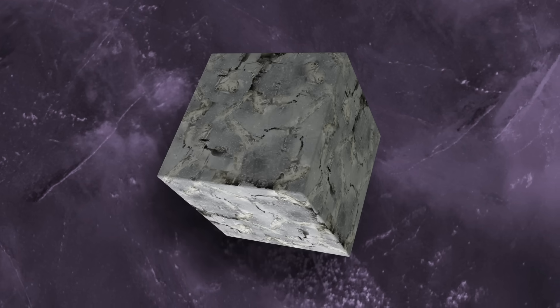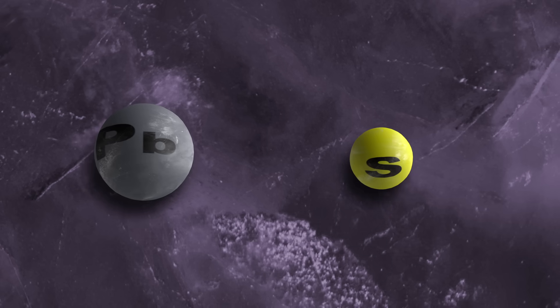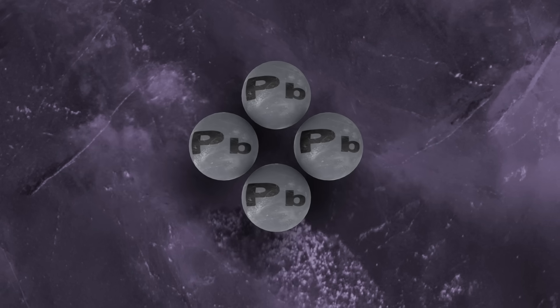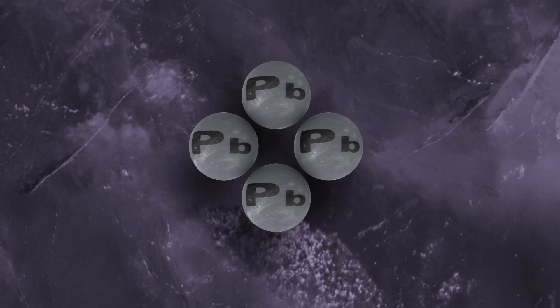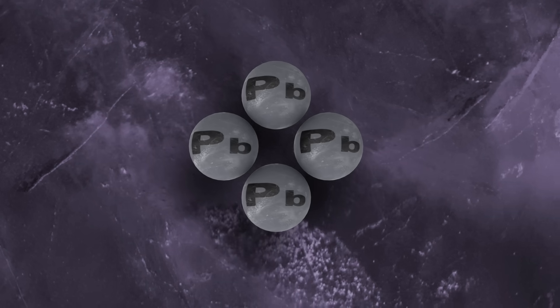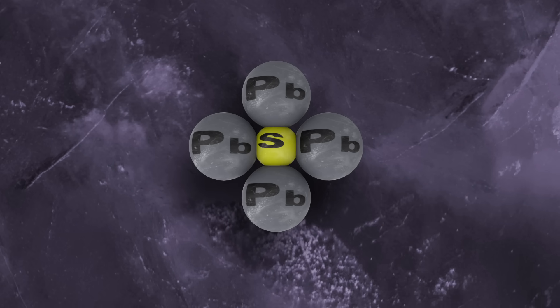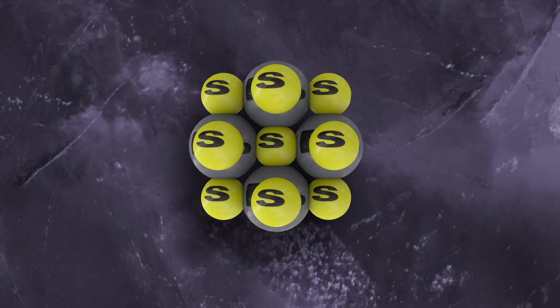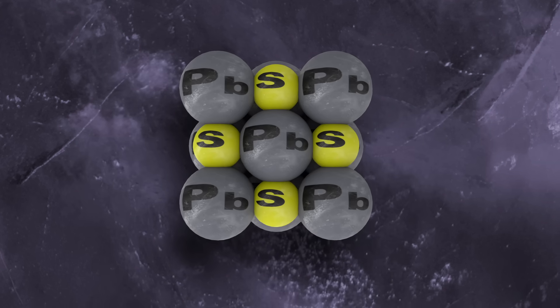Take galena, which has a cubic structure composed of lead and sulfur atoms. The relatively large lead atoms are arranged in a three-dimensional grid 90 degrees from one another, while the relatively small sulfur atoms fit neatly between them. As the crystal grows, locations like these attract sulfur atoms, while lead will tend to bond to these places.